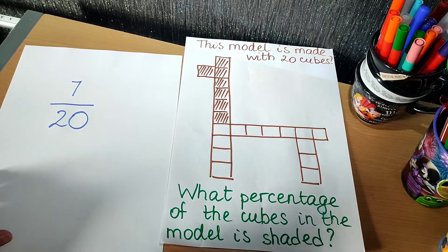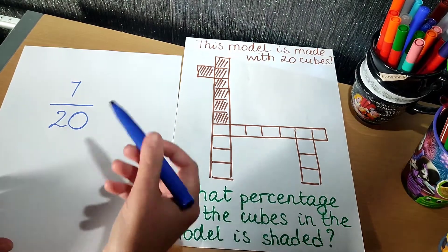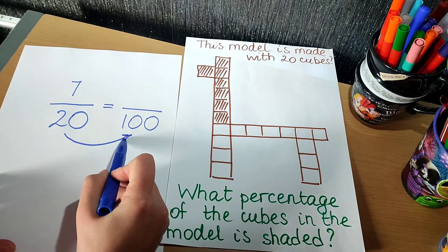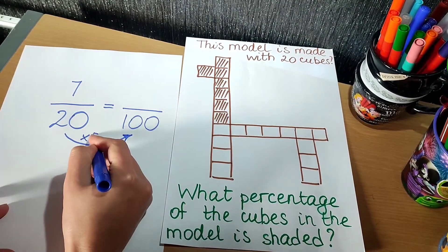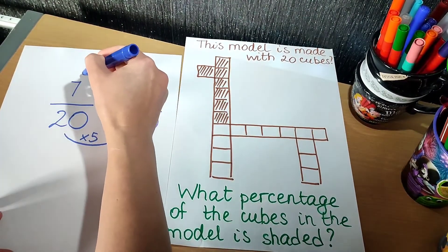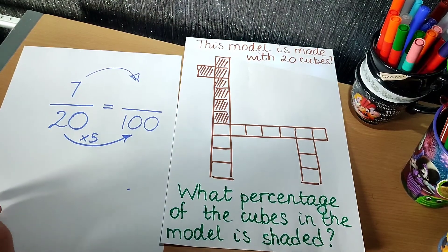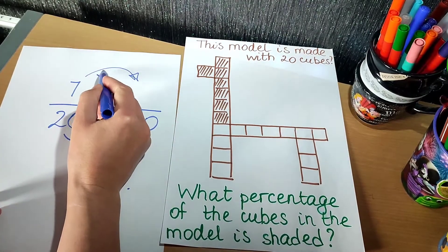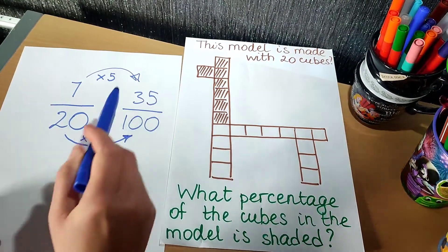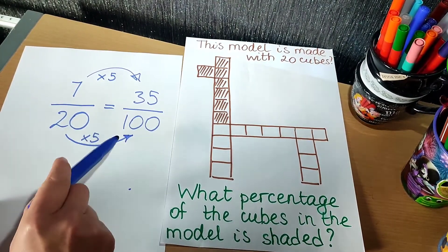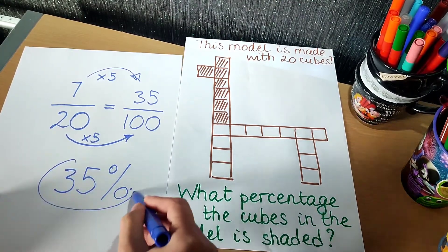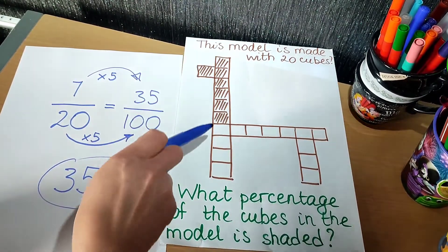Can we turn this fraction into a percentage? Well, let's have a look at our denominator. It's 20, and a percentage is always out of a hundred. Can we easily turn 20 into a hundred by multiplying? Yes, we can — multiply 20 by five. Whatever we do to our denominator, we need to do exactly the same to our numerator. So seven times five is 35. Seven twentieths is the same as 35 hundredths, which is 35%. So 35% of this shape is shaded.